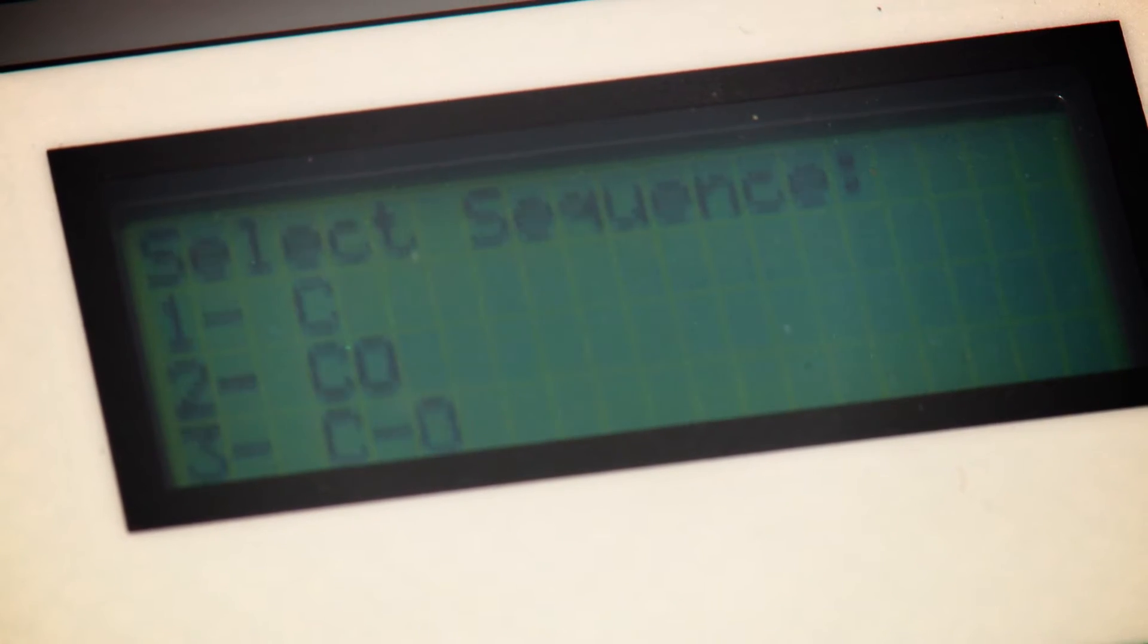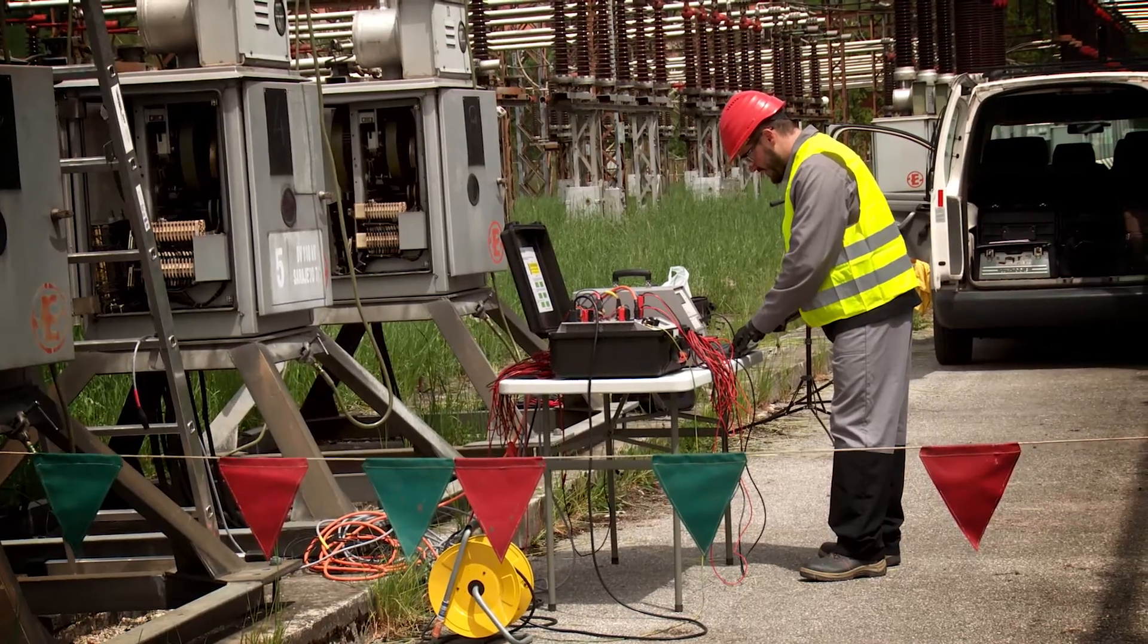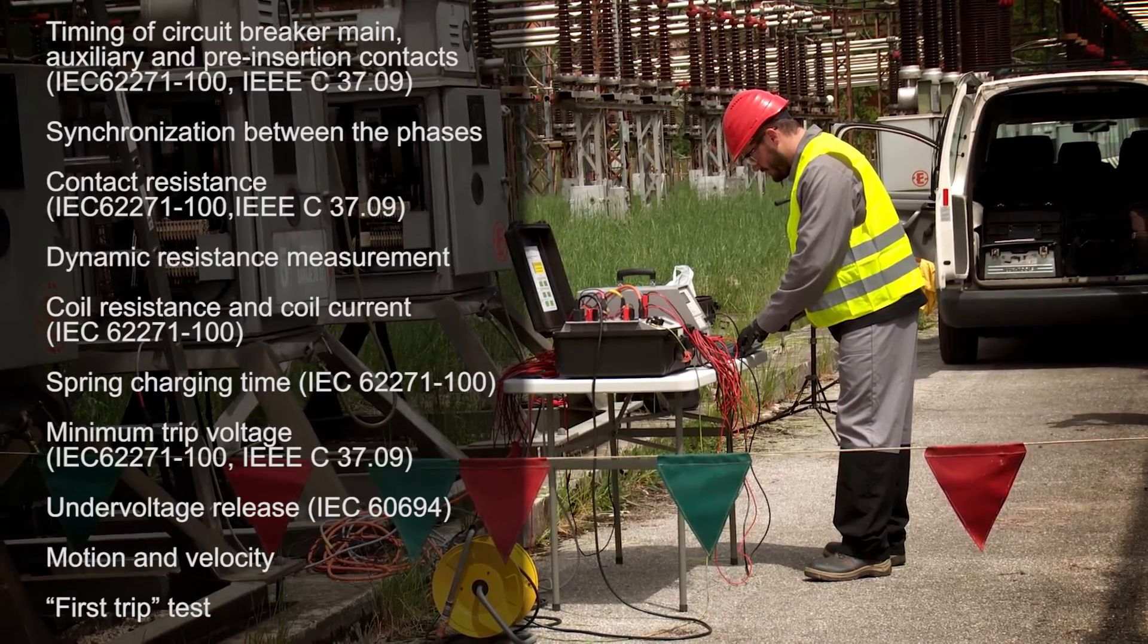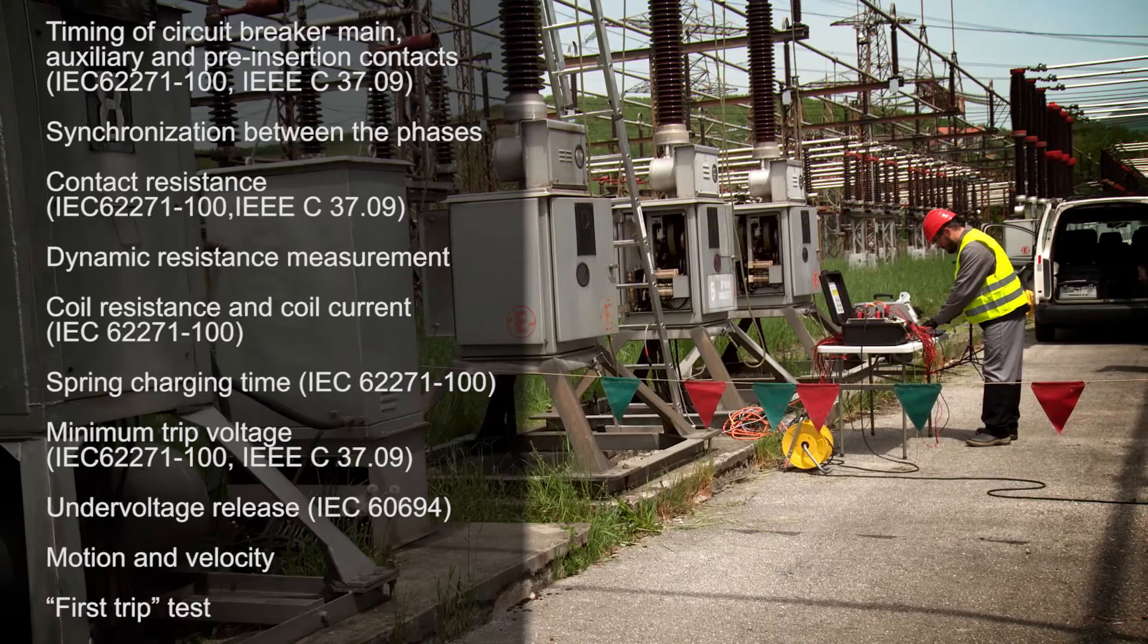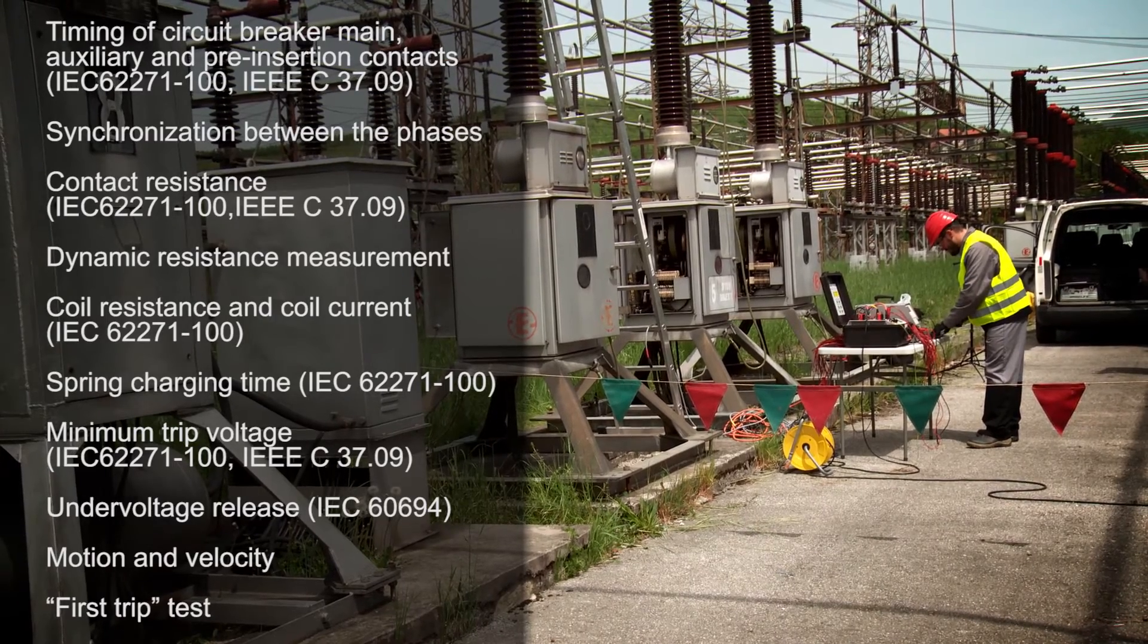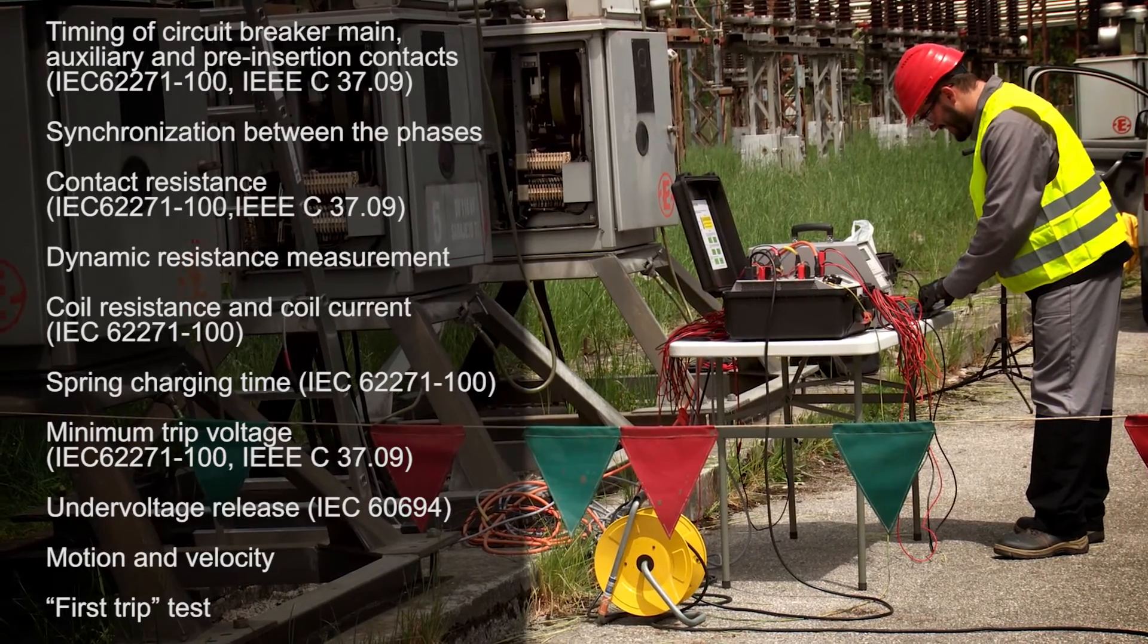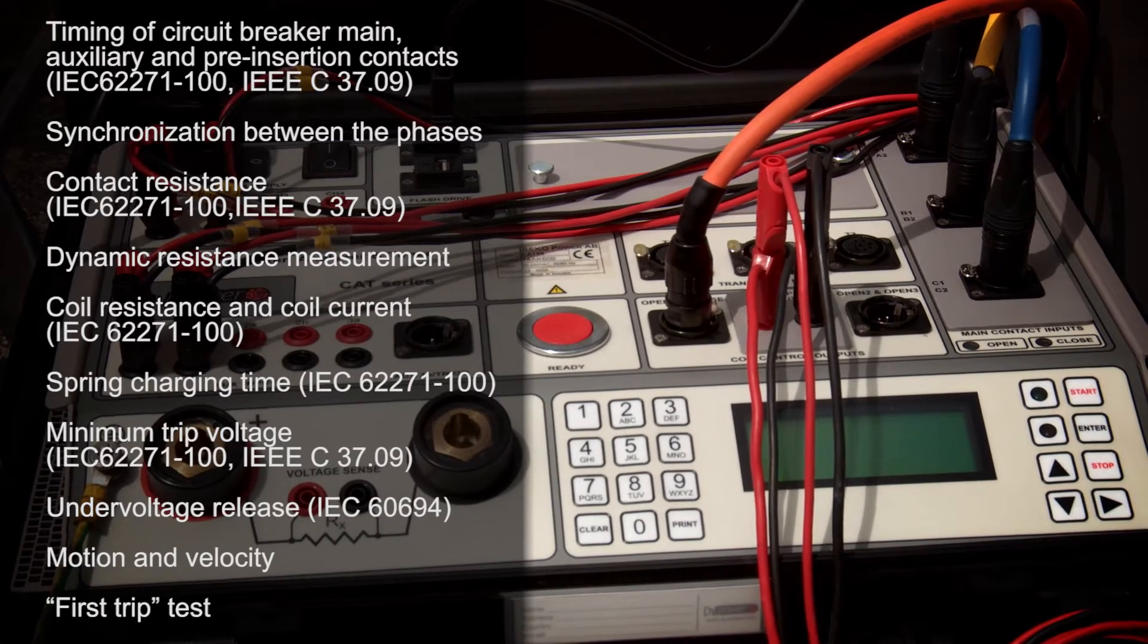Applications supported by DV Power circuit breaker test equipment include measurements of timing of circuit breaker main, auxiliary and pre-insertion contacts, synchronization between the phases, contact resistance, dynamic resistance measurement, coil resistance and coil current, mechanism charging time, minimum trip voltage, under voltage release, motion and velocity, and first trip test.